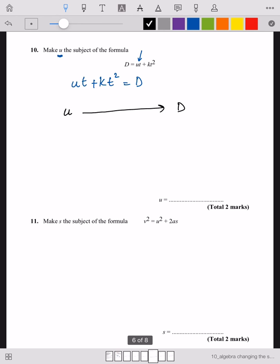d times t plus kt squared. Now just do the inverse.